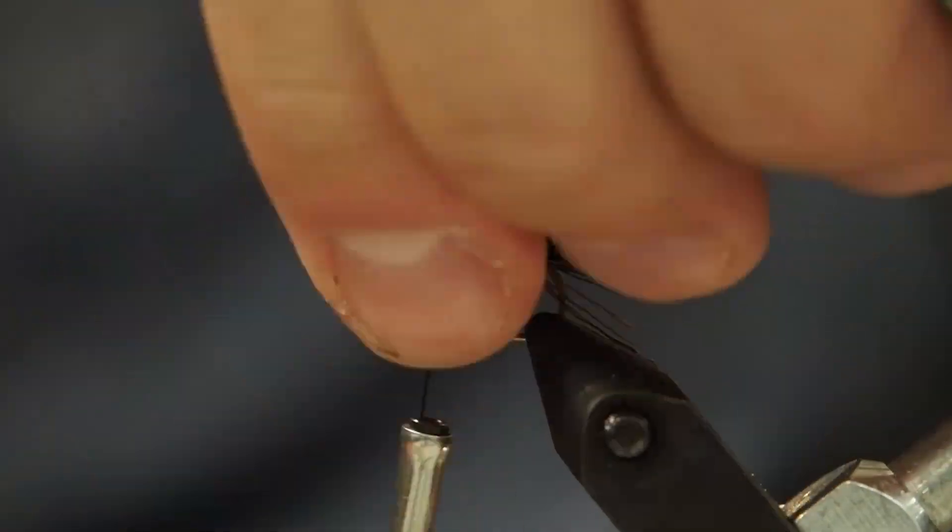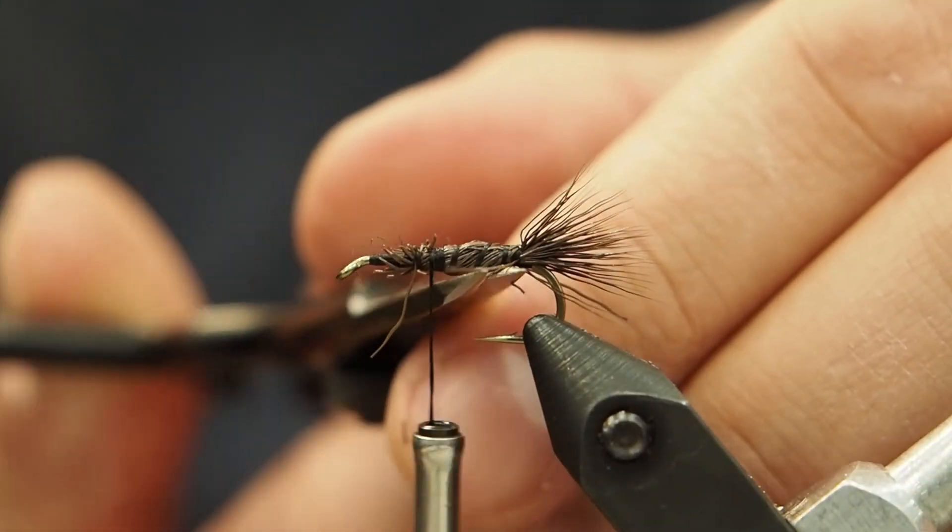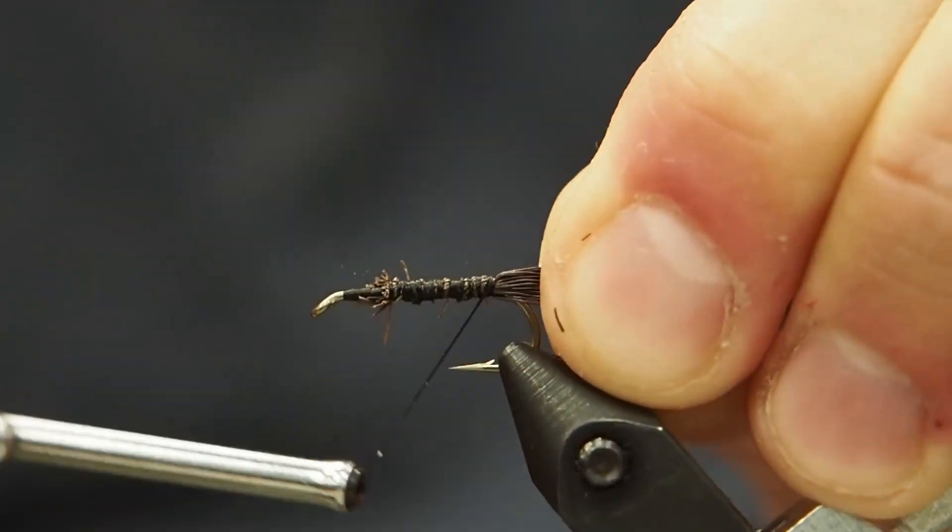Now I like to save as much of the deer hair to make the body taper as possible. So you can notice I'm only clipping it off there at the end. I've loosely wrapped it over the hook. Now I'm going to cinch it down a little bit tighter.